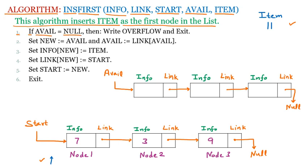Step 1: If available is equal to null — meaning the available list has no free nodes and there is no free space in memory — then we print overflow, which means all memory is full and the element cannot be inserted, then exit. But in our case, available is not null since we have three free nodes, so we proceed to the next step.